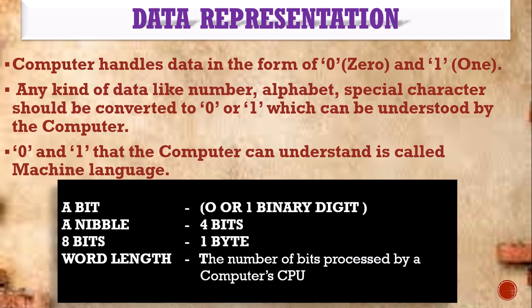Zero or one is called a bit. The computer can understand only zero and one. Bit is short for binary digit. A bit is either zero or one. When four bits are combined, that is called a nibble. If it is a combination of four bits, that is called a nibble. One byte is nothing but an eight-bit combination. Eight bits of zeros and ones combined are called one byte.